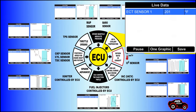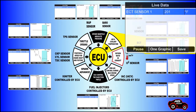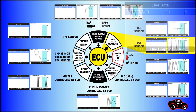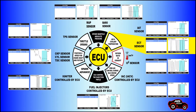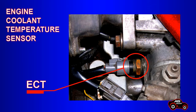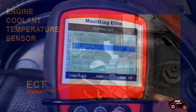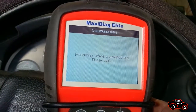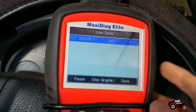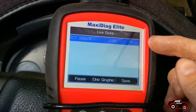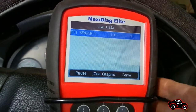The second sensor is the engine coolant temperature sensor. It is a thermistor that sends a variable voltage to the ECU. When there is a change in coolant temperature, the sensor resistance is modified. The sensor is located on the engine just under the distributor. I select the ECT sensor — the engine is warming up and you can see that the temperature is rising in my ECT display.